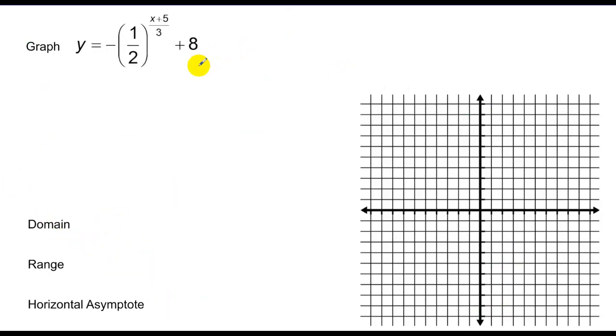In this case, we've got a decay problem because this base is a number whose absolute value is less than 1. It appears this is a b value, and then we have our h and k, so h equals negative 5, k is equal to 8, b is equal to 3, and a is actually equal to negative 1 because I have this negative out here.